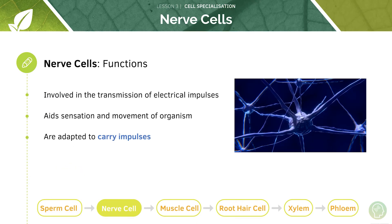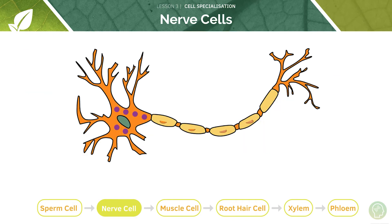Let's move on to nerve cells. Nerve cells are required for the transmission of electrical impulses. They send impulses around the body of animals in order to aid sensation and movement, which means that nerve cells are adapted to carrying impulses. Perhaps you could pause the presentation and try to make a few educated guesses as to how nerve cells may be adapted to carrying impulses.